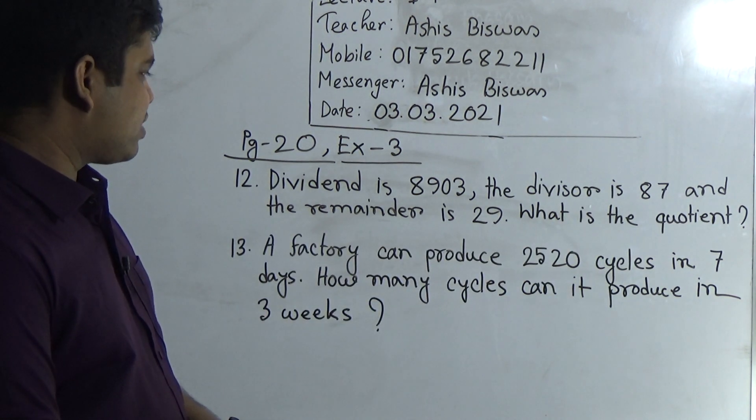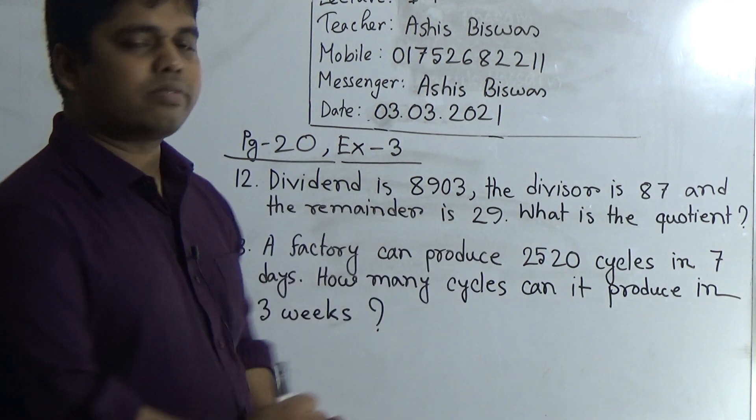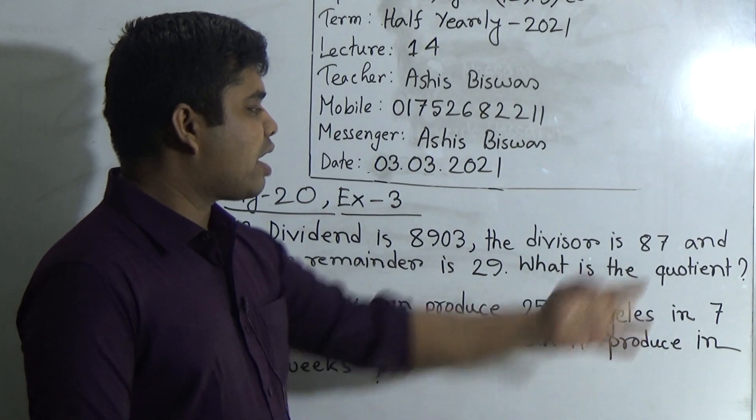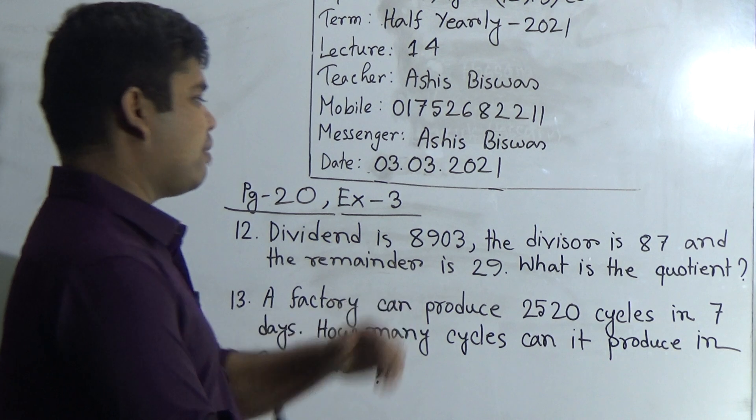Dear students, notice. Dividend is given, divisor is given, and remainder is also given. We need to find out the quotient by using this dividend, divisor, and remainder.